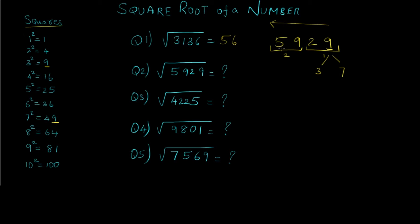For the tens place we need to observe the group 59 and find the largest number which is equal to or less than 59. That is 49, which is 7 squared. So we write down 7 for the tens place. Now in order to calculate the units place, we add 1 to 7 to get 8 and multiply it with 7, which gives us 56.